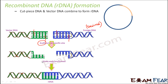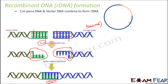Since EcoRI always cuts the same recognition sequence, this part of the vector DNA and this part of the foreign DNA are complementary to each other. The sticky ends are complementary, so they tend to combine together, forming a recombinant DNA. That is why it is very important that the same enzyme cuts both the foreign DNA and the vector DNA — so that complementary sticky ends can be formed.